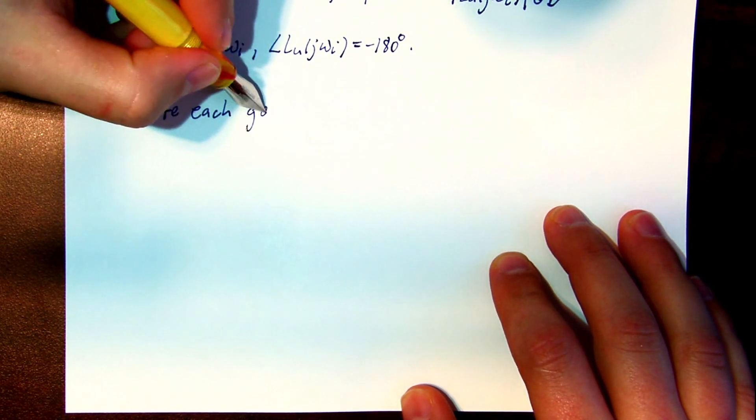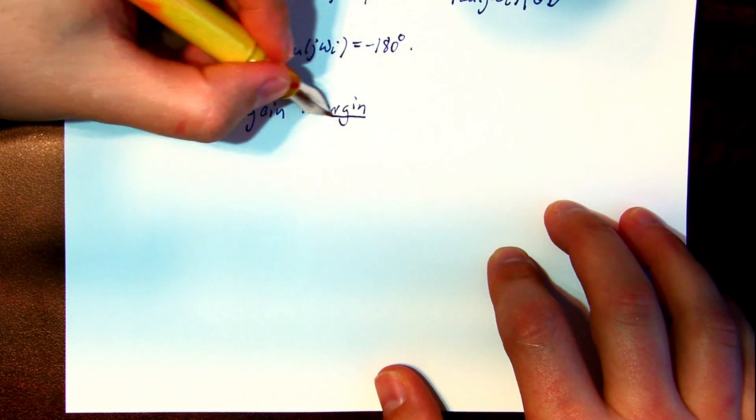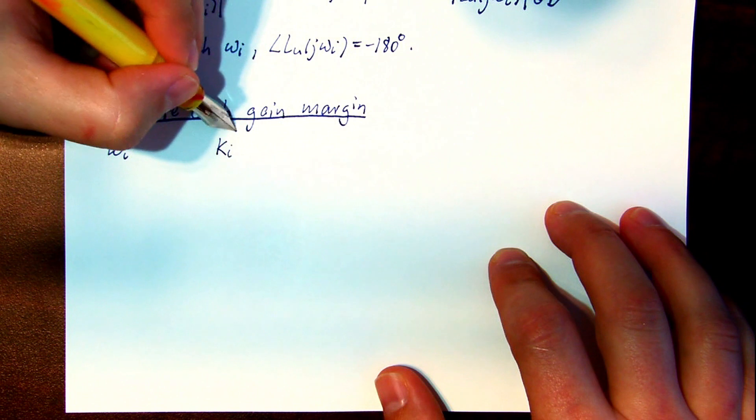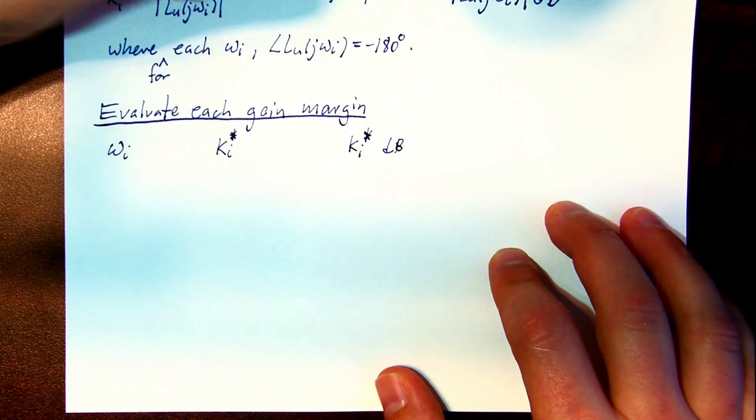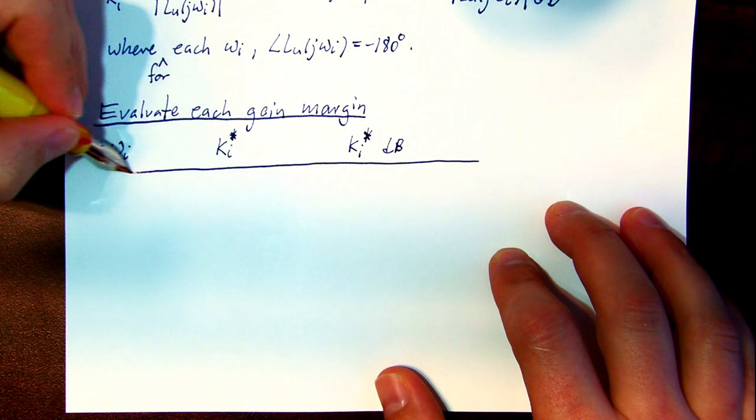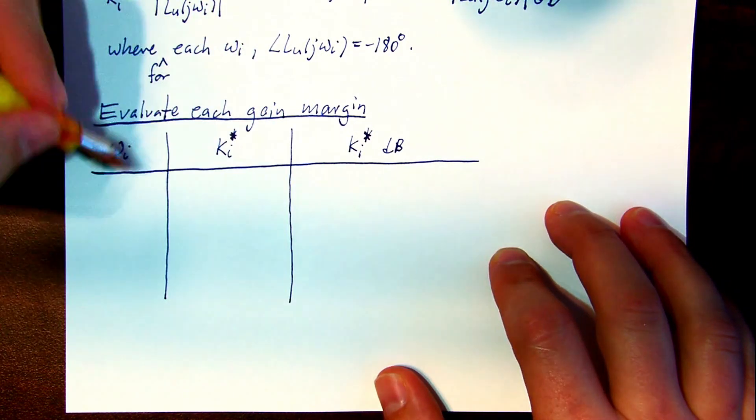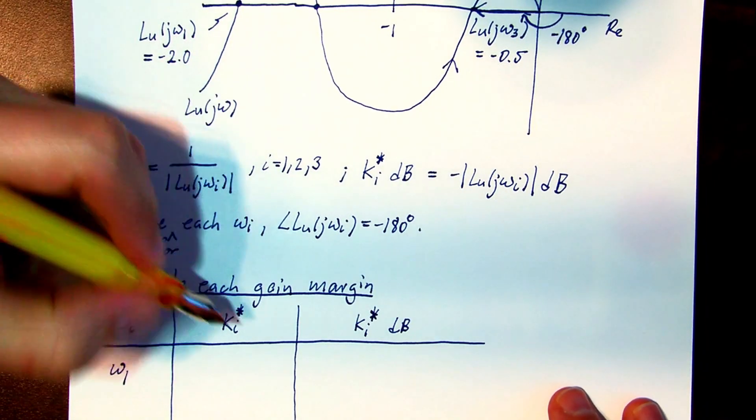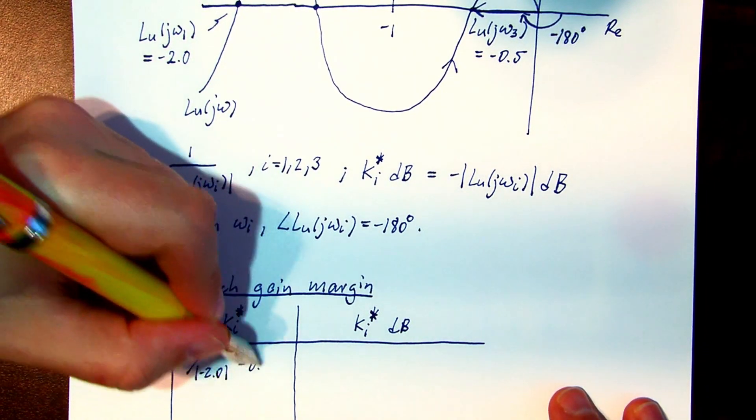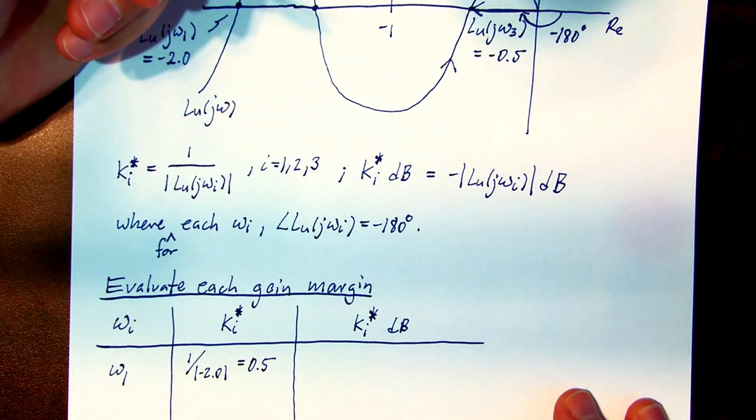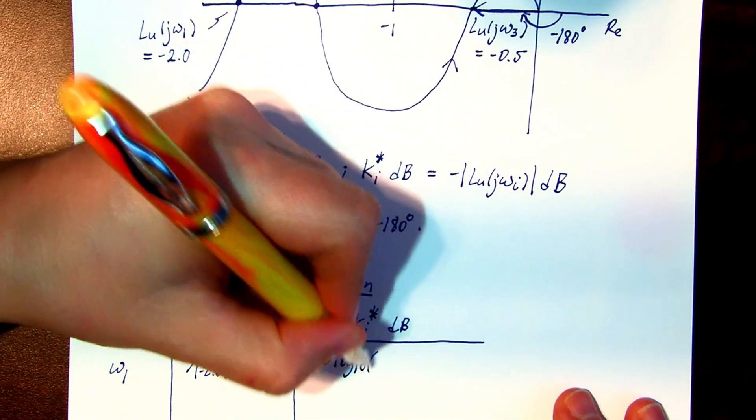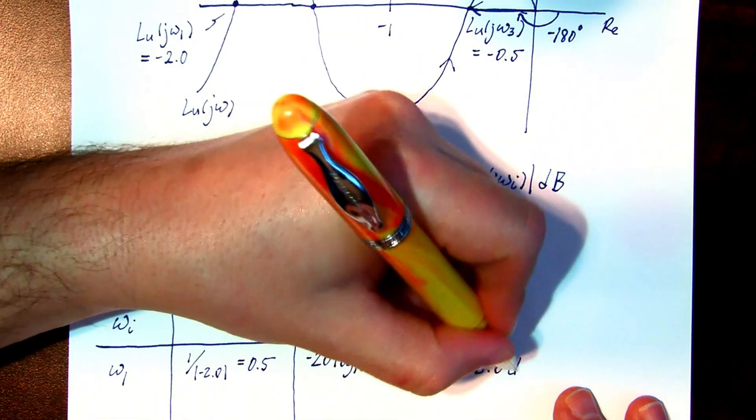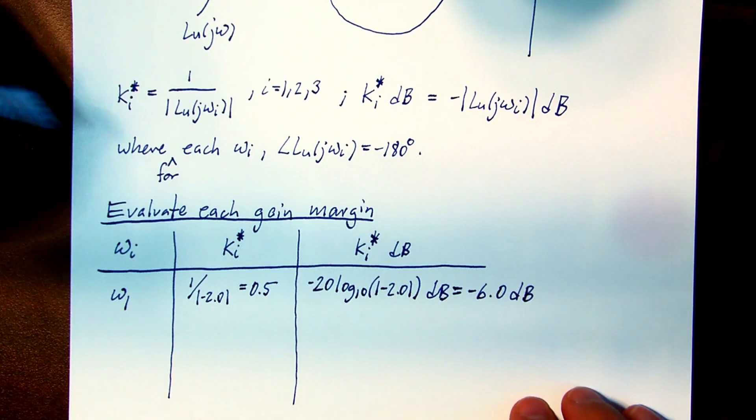Let's evaluate each of these gain margins. We'll evaluate it for each omega, the gain margin itself, and then the gain margin in decibels. The lowest frequency, omega 1. Loop gain has a value of minus 2, so 1 over 2 is a half, and in decibels, we know that that's minus 6.02 dB.